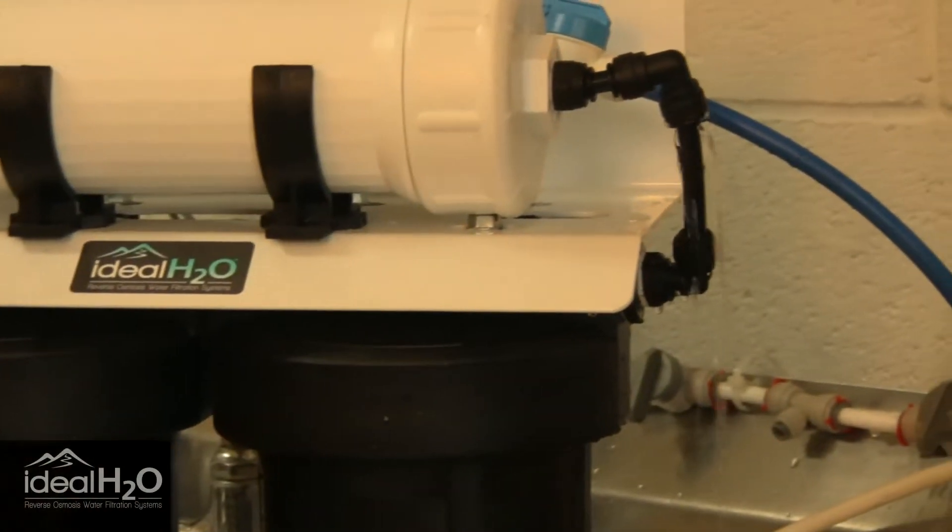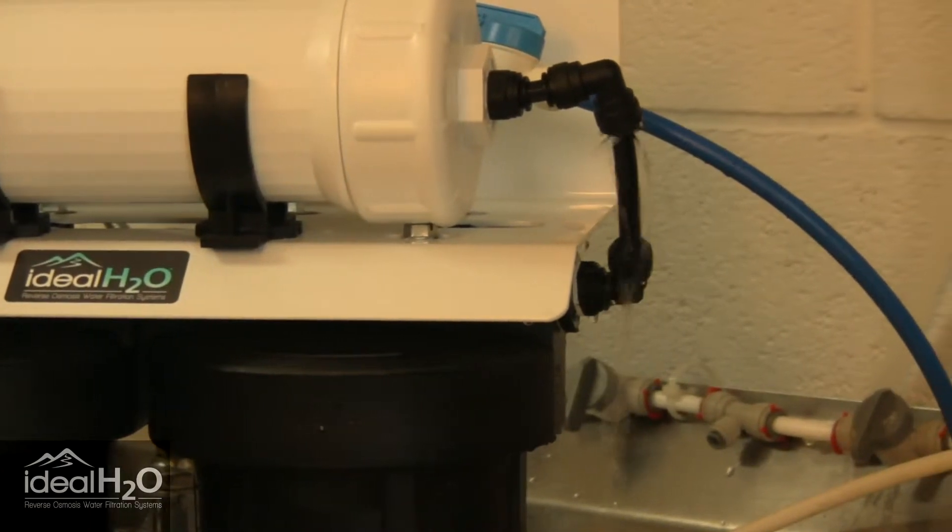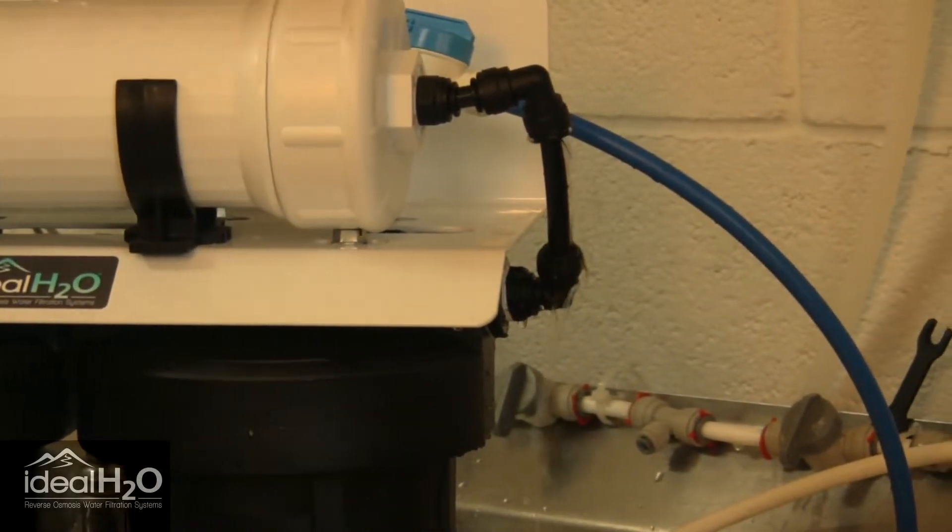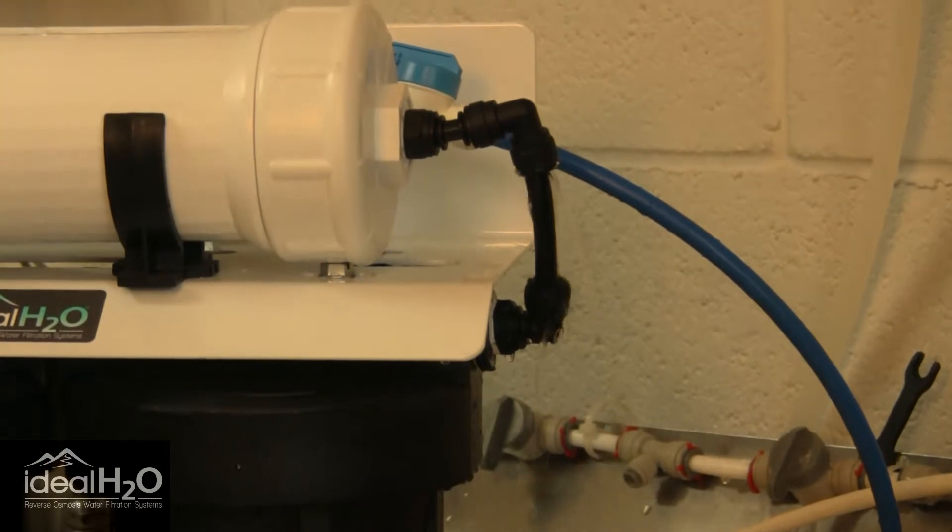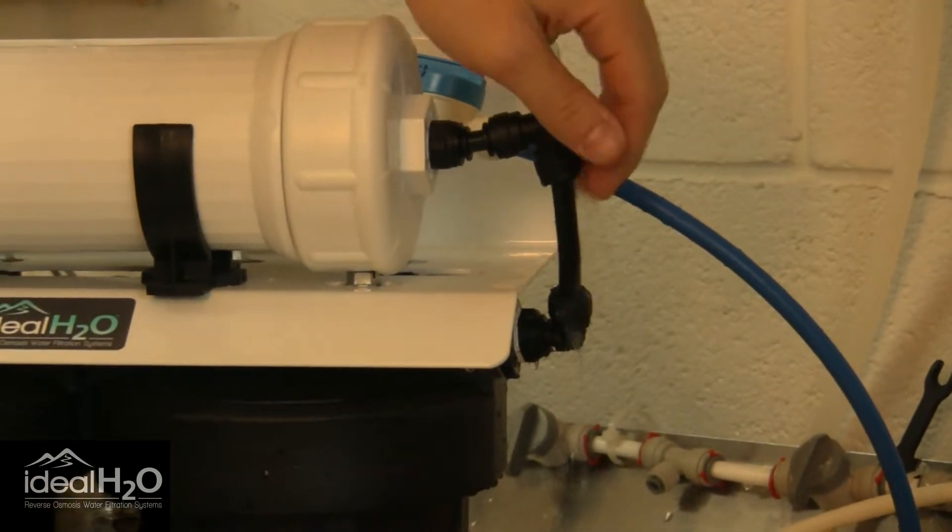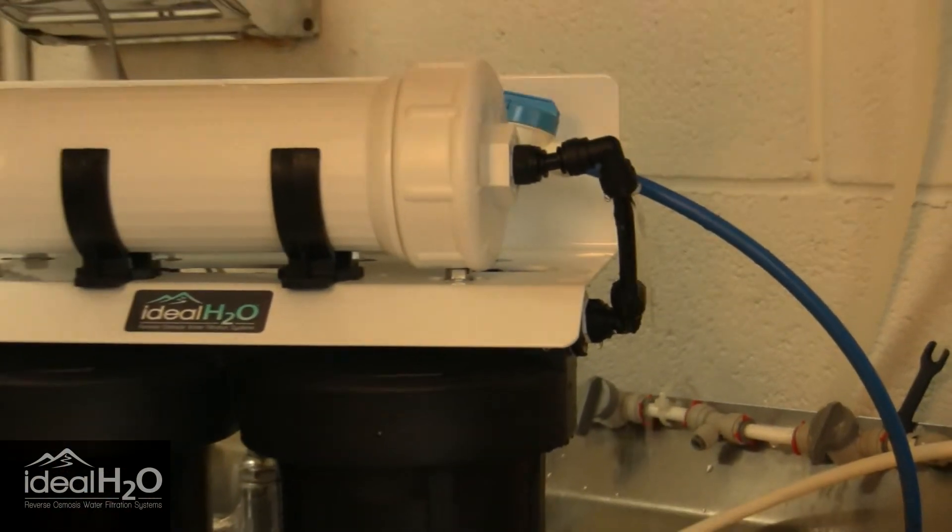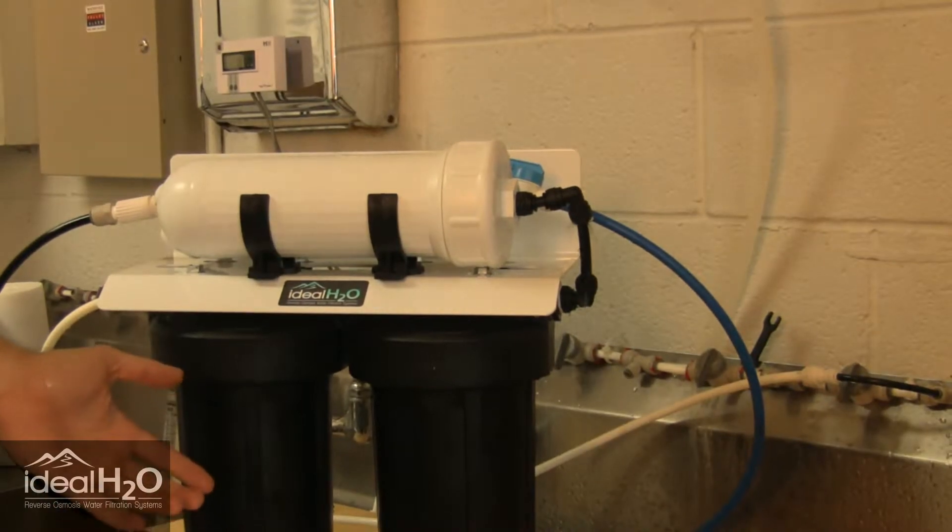We have the ideal H2O 600 gallon per day RO unit here. It has a leak right after the pre-filter going into the membrane. We just have a tubing leak, and we're going to go ahead and fix that.